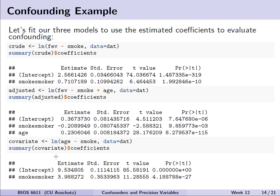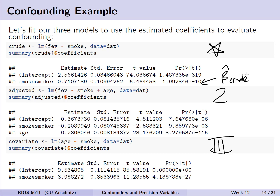To evaluate confounding, let's fit the three models. The crude model uses only smoking as a predictor. The adjusted model adds age as the potential confounder. The third, covariate model, uses age as the outcome with smoking as the sole predictor. From these models we leverage: beta hat crude from model one; beta hat adjusted and beta hat sub c from model two; and gamma hat sub x from model three.